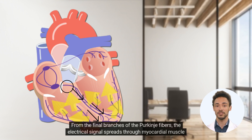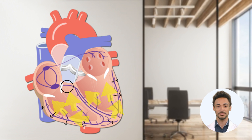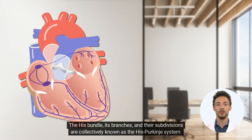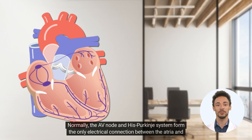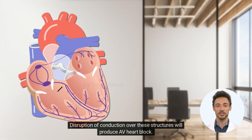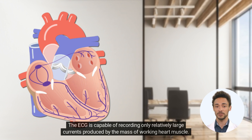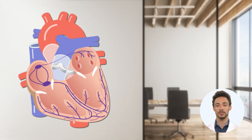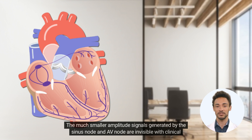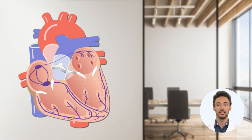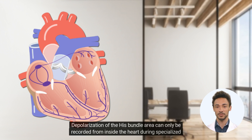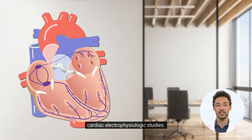From the final branches of the Purkinje fibers, the electrical signal spreads through myocardial muscle toward the epicardium. The His bundle, its branches, and their subdivisions are collectively known as the His-Purkinje system. Normally, the AV node and His-Purkinje system form the only electrical connection between the atria and the ventricles. Disruption of conduction over these structures will produce AV heart block. The ECG can only record relatively large currents produced by the mass of working heart muscle; the much smaller signals from the sinus node and AV node are invisible in clinical recordings, and depolarization of the His-bundle area can only be recorded from inside the heart during specialized electrophysiologic studies.